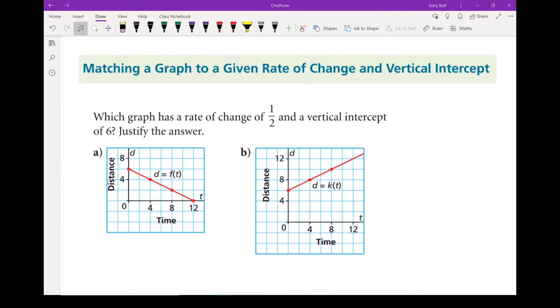Okay. Let's move on to the next set of questions. Let's match a graph to a given rate of change and vertical intercept. So here we've got a question where I'm given two pieces of information. Rate of change of 1 half, so our slope is 1 over 2, and a vertical intercept of 6, our starting point is 6. Which of these two graphs fits that best? Well, I'm going to start with that vertical intercept of 6.